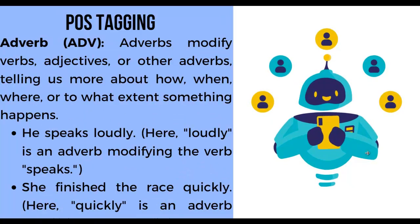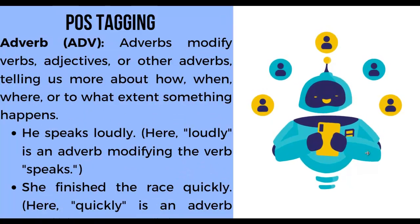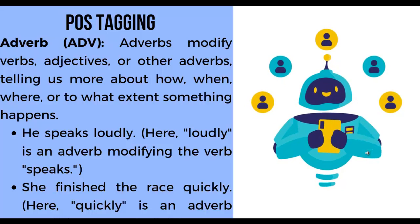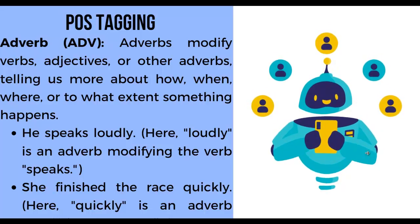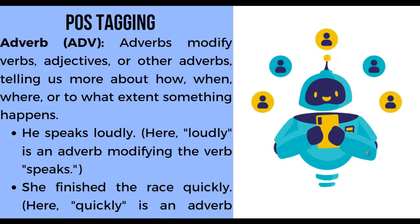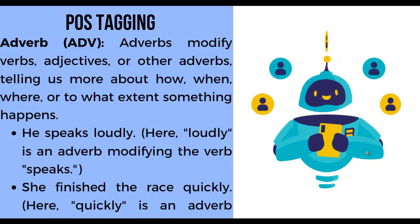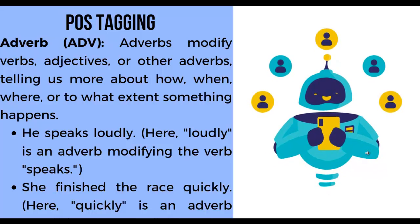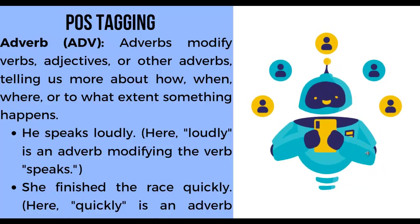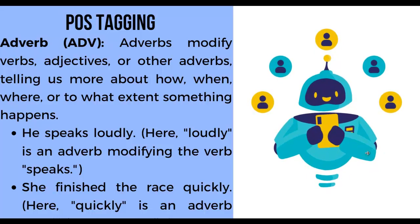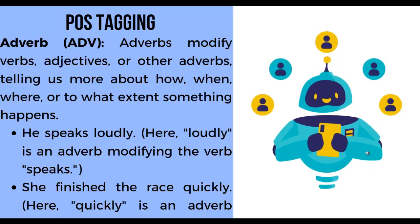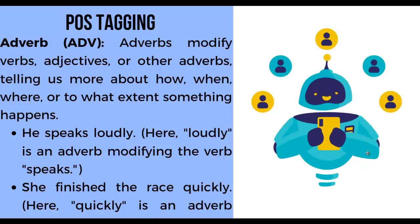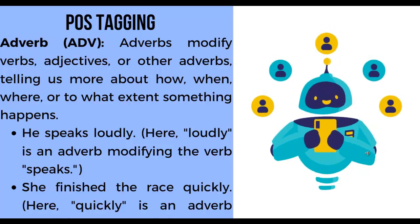Next, adverb. Adverbs modify verbs, adjectives, or other adverbs, telling us more about how, when, where, or to what extent something happens. First example: 'He speaks loudly' — here, 'loudly' is an adverb modifying the verb 'speaks'. Second example: 'She finished the race quickly' — here, 'quickly' is an adverb modifying the verb 'finished'.